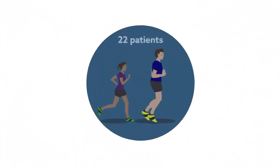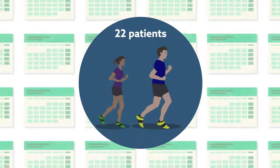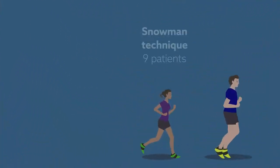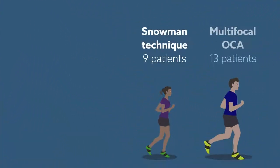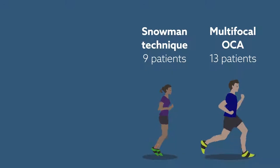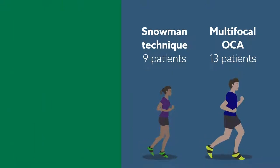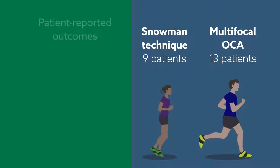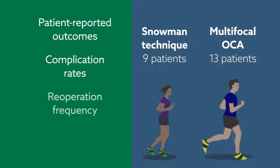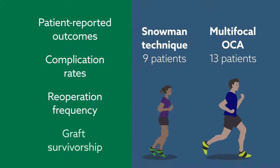In total, the team retrospectively reviewed records from 22 patients who were followed for a minimum of two years. Nine patients underwent the SNOWMAN technique, and 13 underwent multifocal OCA. To gauge the clinical results produced from each method, the researchers compared patient-reported outcomes, complication rates, reoperation frequency, and graft survivorship.